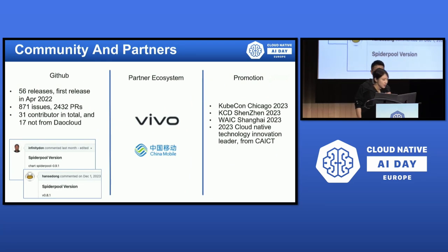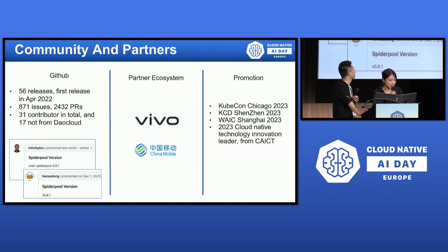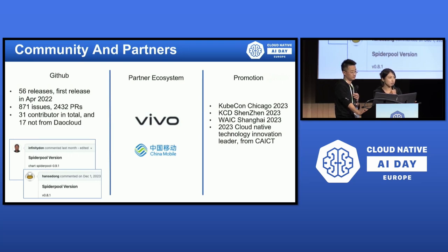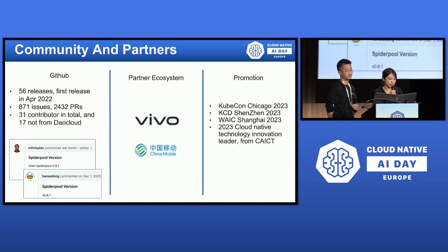Now I will introduce SpiderPool's community and partners. SpiderPool is dedicated to building a vibrant community ecosystem. Since April 2022, the project has released 56 versions. At present, half of the contributors come from non-CloudCloud companies. SpiderPool's community has cooperated with several well-known companies, including Vivo, a large mobile phone manufacturer in China, and China Mobile, one of the biggest Chinese telecom companies. SpiderPool has been actively promoted at various events such as KubeCon, KCD, and WAIC.